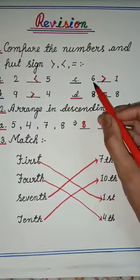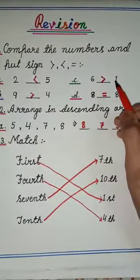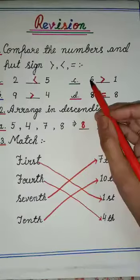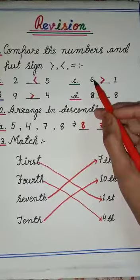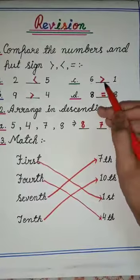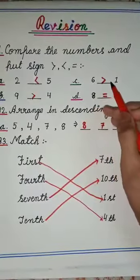Now see these numbers. Here we have numbers 6 and 1. We know that 1 is smaller and 6 is bigger. So we will put here this sign which shows 6 is bigger than 1 or 6 is greater than 1.